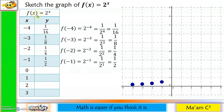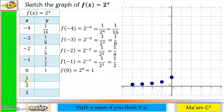For x = 0: f(0) = 2 raised to 0. Any expression except 0 raised to 0 equals 1, so the value is 1. We plot the point at (0, 1). For x = 1: f(1) = 2 raised to 1, which equals 2. We plot the point at (1, 2).